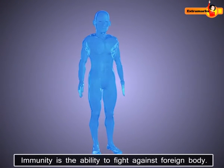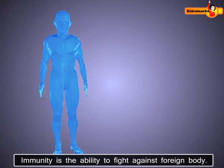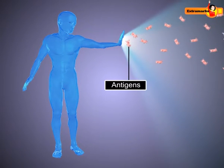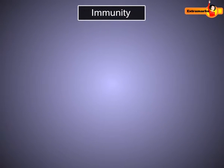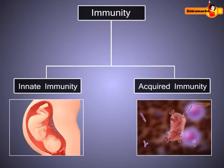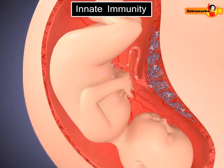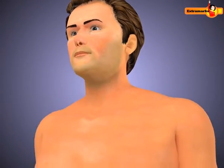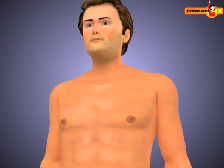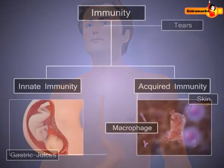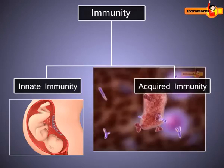Immunity is the ability of a living body or host to fight against foreign bodies, antigens, and pathogens. Immunity is of two types: innate and acquired. Innate immunity is something we all possess since birth. In this type, the body's first line of defense comes into action, and it includes tears, skin, and gastric juices.